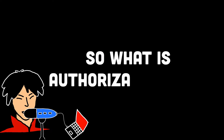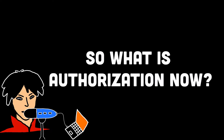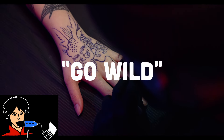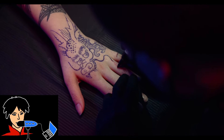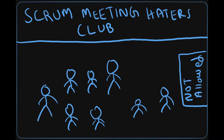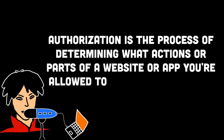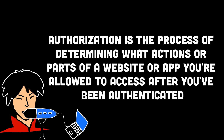Now continuing with the bouncer example, let's understand authorization. Once you've passed the authentication and proved that you're a member of the club, authorization comes into play. Authorization is like getting a special stamp on your hand that determines what you're allowed to do inside the club. It sets the boundaries and permissions for your access. In the digital world, authorization is the process of determining what actions or parts of a website or app you're allowed to access after you have been authenticated.